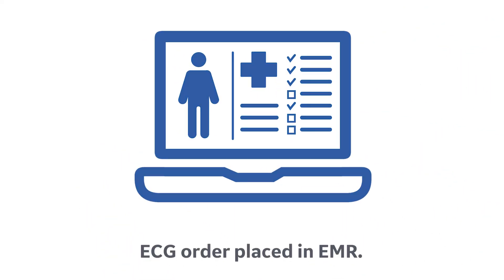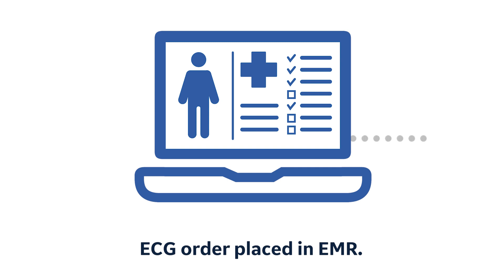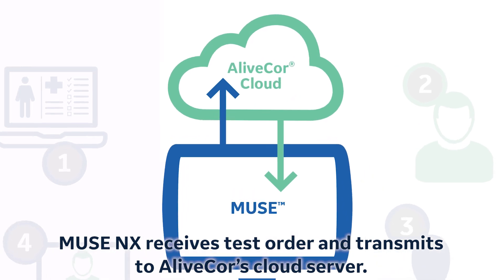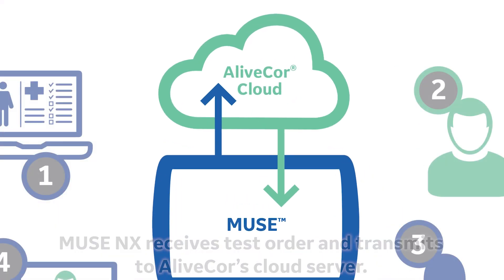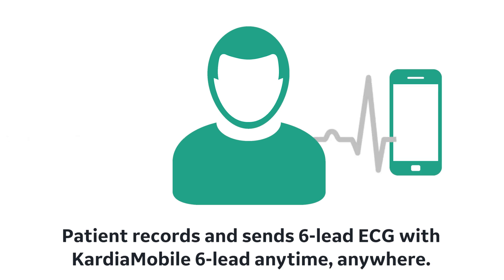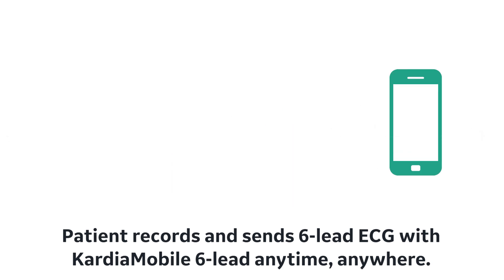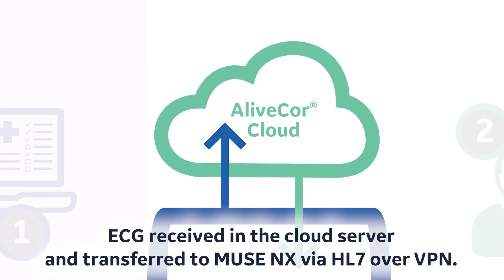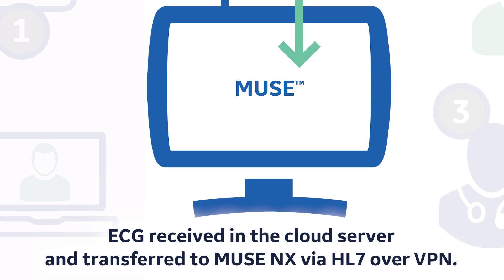An ECG order is placed in the EMR. Muse NX receives the test order and transmits to a LiveCore cloud server. The patient records and sends the 6-lead ECG with Cardiomobile 6-lead anytime, anywhere. The ECG is received in the cloud server and transferred to Muse NX via HL7 over VPN.